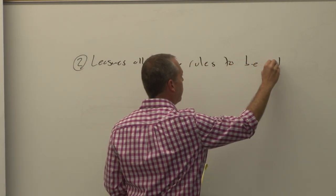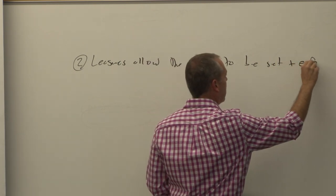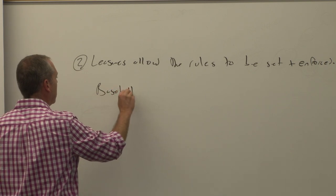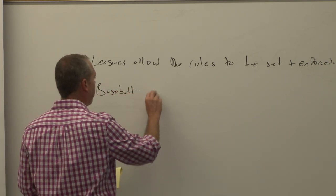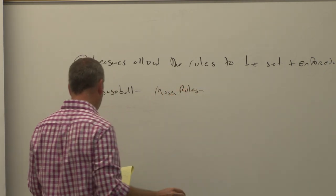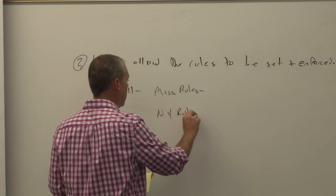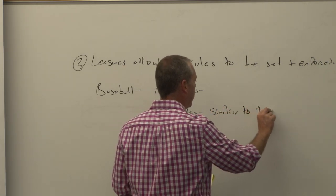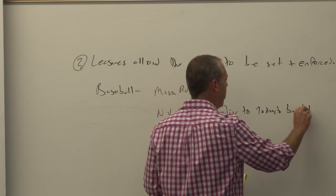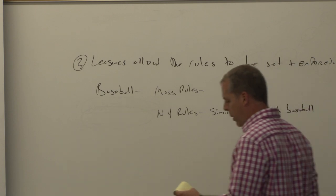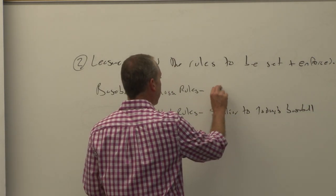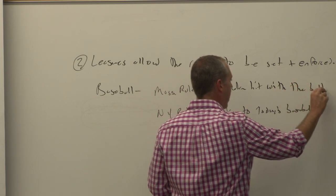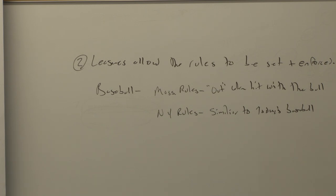Leagues also allow the rules to be set and enforced. So for example, in Major League Baseball, you actually had two sets of rules. You got the Massachusetts rules, and you got New York rules. And these New York rules are basically similar to today's baseball. But Massachusetts rules, you're basically out when you're hit with the ball. It's not a matter of being tagged. It's a matter of, we've got to hit you with the ball.